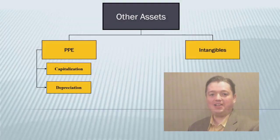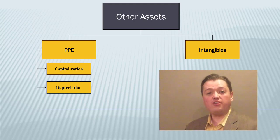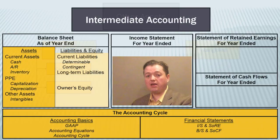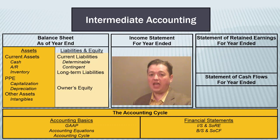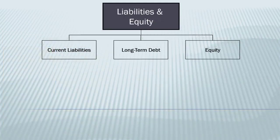Welcome back to our intermediate financial accounting class. Over our last couple of sections we've been talking about intangible assets, wrapping up our discussion of other assets, and finishing up our overall module of assets. So we've talked about the accounting cycle, we've now finished our discussion of the assets of a business, and now we're going to turn our attention to the rest of the balance sheet, talking about the way that we pay for those assets. We're going to break this discussion down into three pieces: current liabilities, long-term liabilities, and equity.